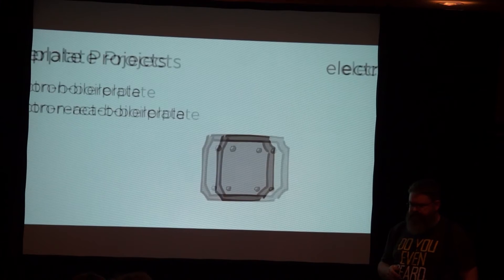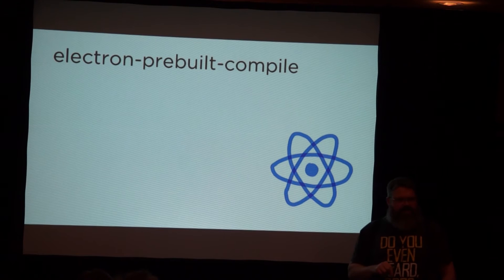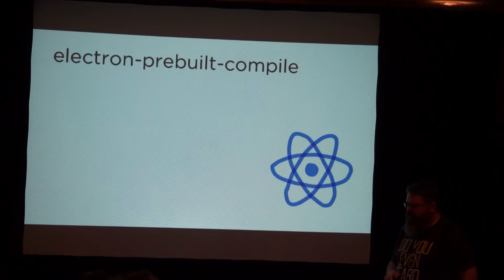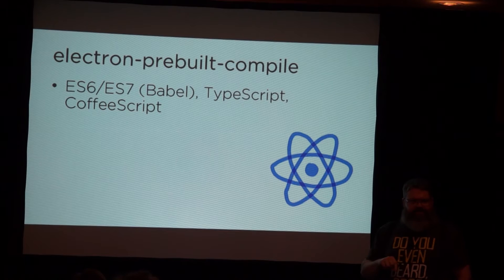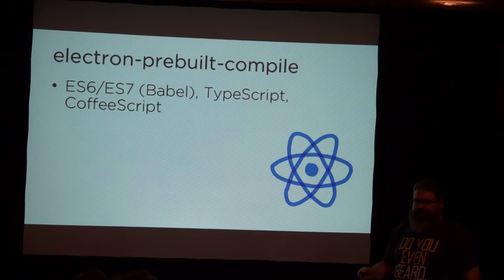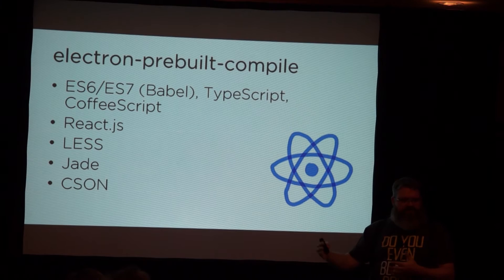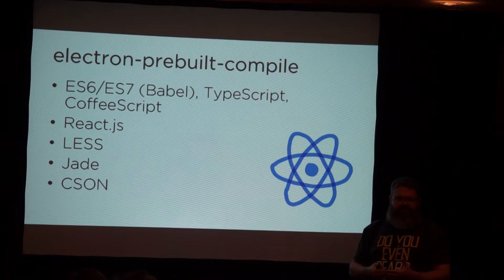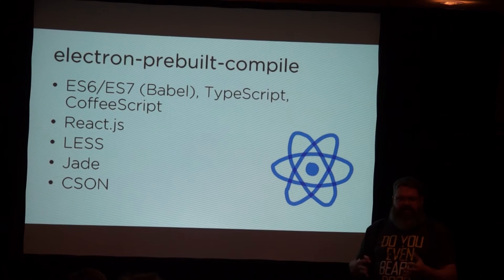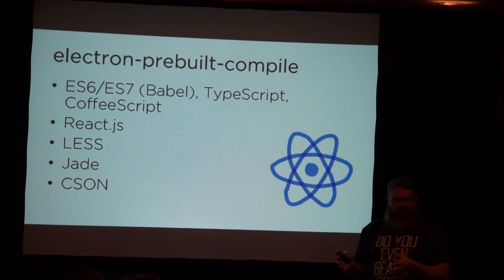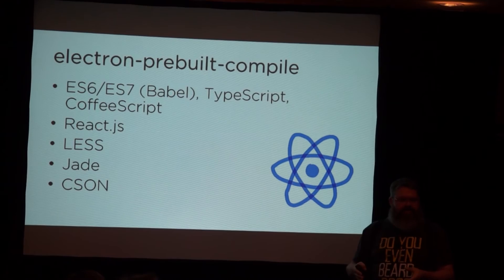There's a brand new one: Paul Betts, one of the guys on the Electron team at GitHub, has created a drop-in replacement called Electron Prebuilt Compile. It has transpilers and useful tools built right into it, so if you want to use TypeScript, CoffeeScript, React, Less, or Jade templates, it understands these things right out of the box. You don't need Gulp scripts to go and do those transpilation steps. If TypeScript is your thing, you can do TypeScript all day long and it just knows at runtime how to deal with it. Really awesome.